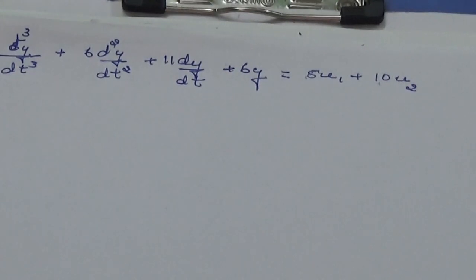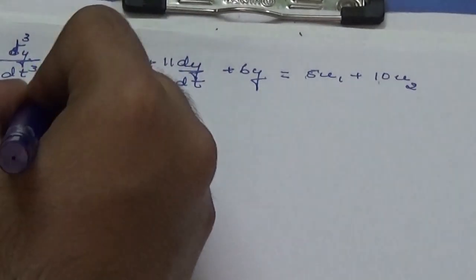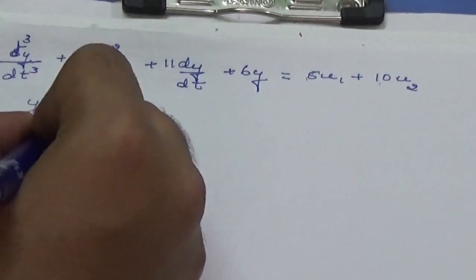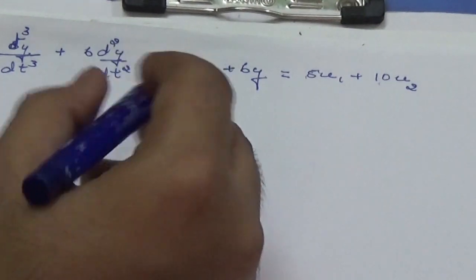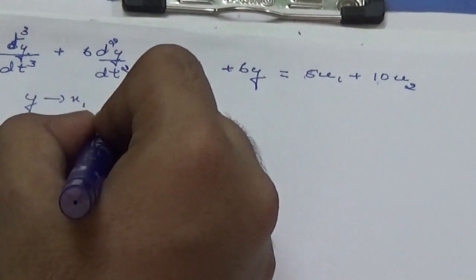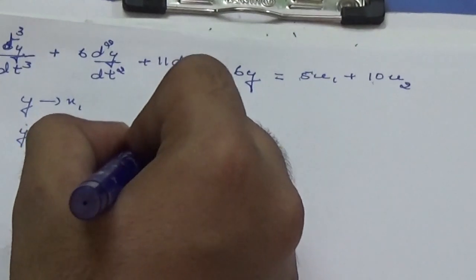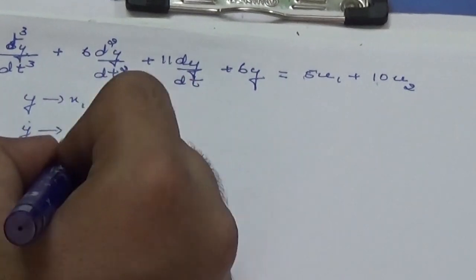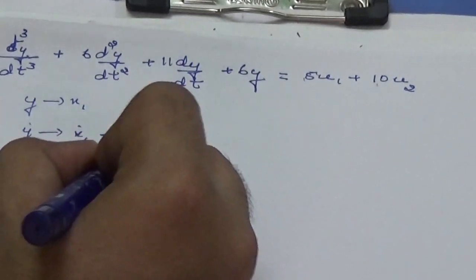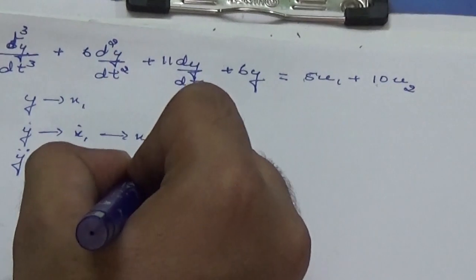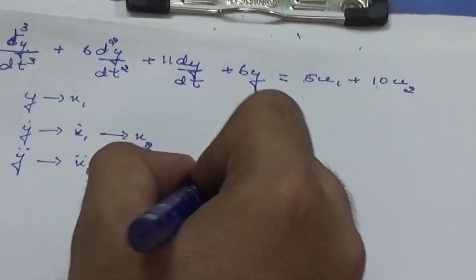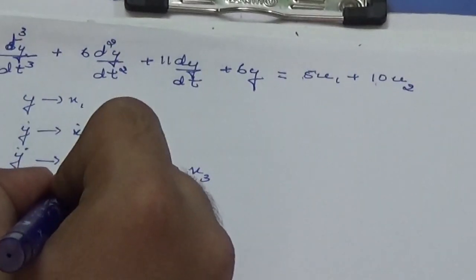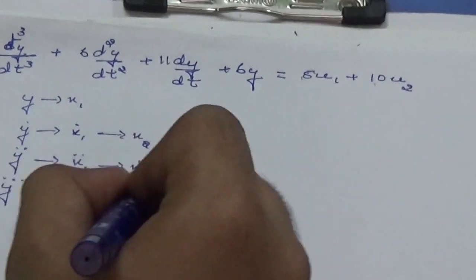Let us represent y as x₁. Then y dot, which represents dy/dt, as x₁ dot which represents x₂. Y double dot, which is d²y/dt², as x₁ double dot that gives x₂ dot that gives x₃. Now y triple dot can be written as x₁ triple dot which can be written as x₂ double dot which can be written as x₃ single dot.